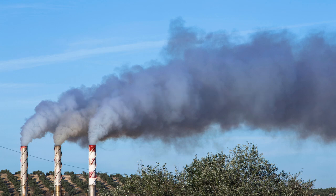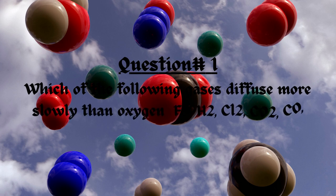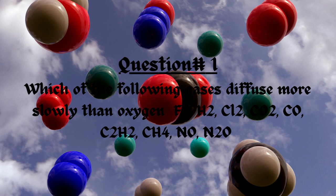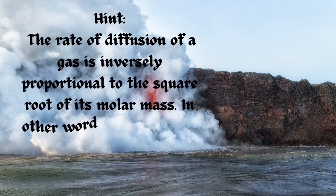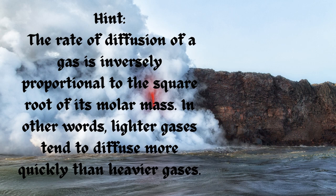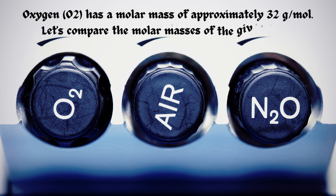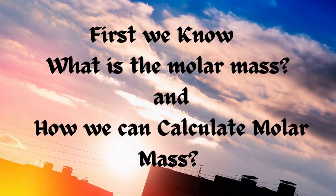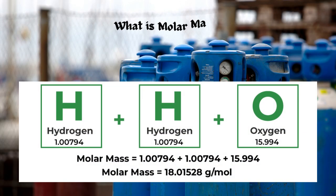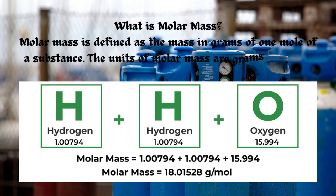Now practice some structured questions. Question 1: Which of the following gases diffuse more slowly than oxygen — F2, H2, Cl2, CO2, CO, C2H2, CH4, NO, N2O? Hint: the rate of diffusion of a gas is inversely proportional to the square root of its molar mass. In other words, lighter gases tend to diffuse more quickly than heavier gases. Oxygen, O2, has a molar mass of approximately 32 grams per mole. Molar mass is defined as the mass in grams of one mole of a substance, with units of grams per mole. It is calculated by adding the standard atomic masses of the constituent atoms.